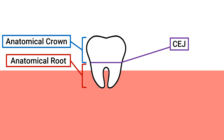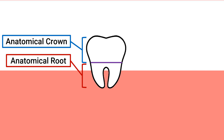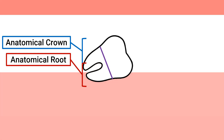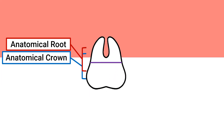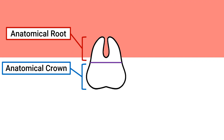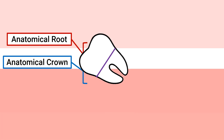When that's a lower mandibular tooth such as this one, anything above the CEJ line will be the anatomical crown and anything below will be the anatomical root. However, if it were instead an upper maxillary tooth, then it will be the opposite — anything below the CEJ will be the anatomical crown, while anything above the CEJ will be the anatomical root. Now let's go back to our lower mandibular tooth.